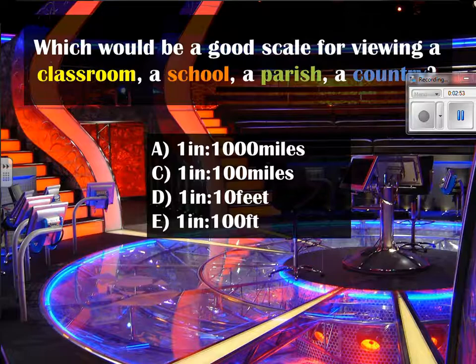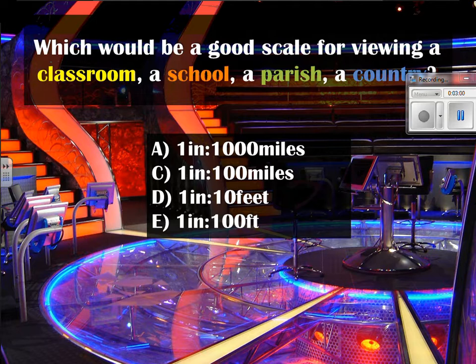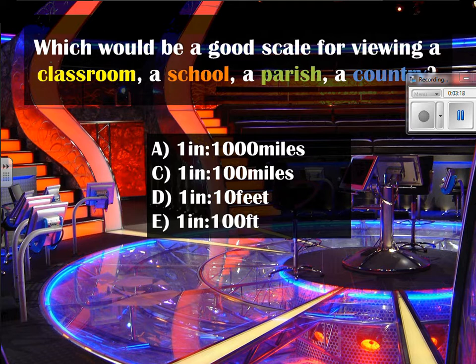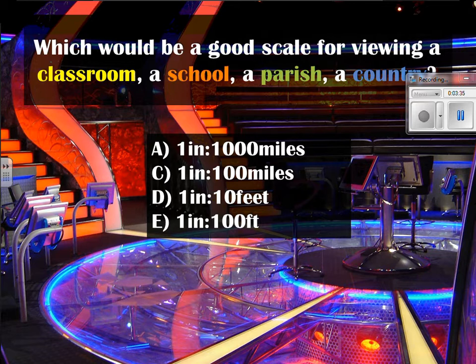Here's a quiz question: which would be a good scale to view a classroom, a school, a parish (like a county), or a country? For a classroom, you would have D — one inch equals 10 feet. For a school, E — one inch equals 100 feet. A parish or county would be C — one inch equals 100 miles. And a country would be A — one inch equals 1,000 miles.